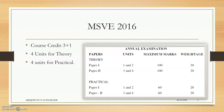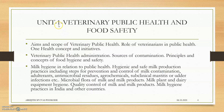As per MSVE 2016, the credit is 3 plus 1, that is 3 theory and 1 practical per week — 4 units of theory and 4 units of practical. The final examination will be conducted in this pattern, and 20 marks will be taken from the internal assessment.